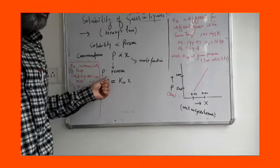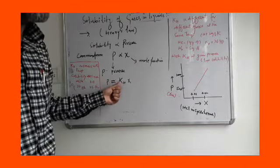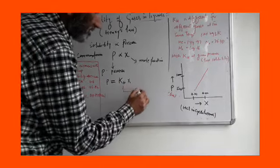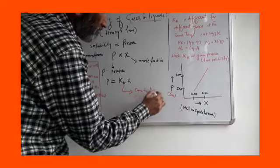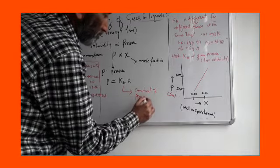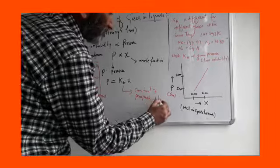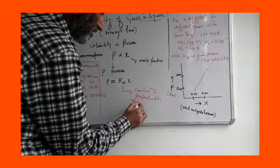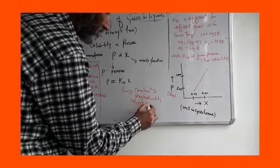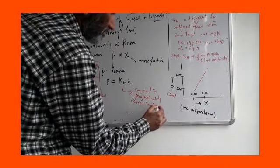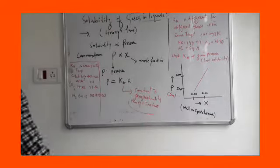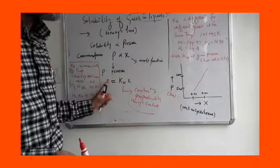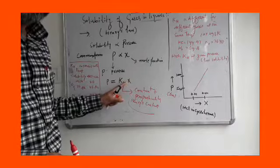We can write this relation as P = KH · X, where P is the partial pressure, X is the mole fraction, and KH is the constant of proportionality known as Henry's constant.